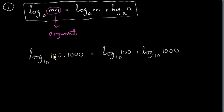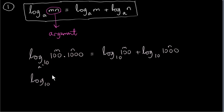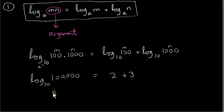We get log of m to base a plus log of n to base a. Here's a fairly simple example. Suppose that m is 100 and n is 1000 and our base a is 10. We can break that into log of 100 to base 10 plus log of 1000 to base 10. Let's just check this because we can do it without a calculator. 100 times 1000 is a one with five zeros.